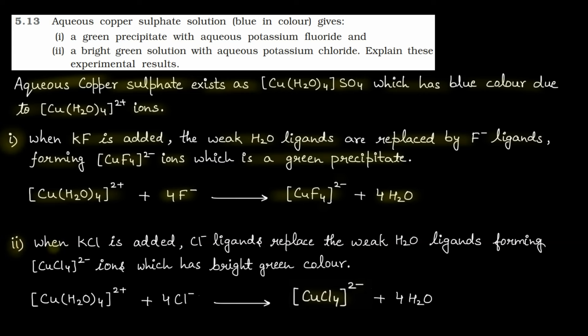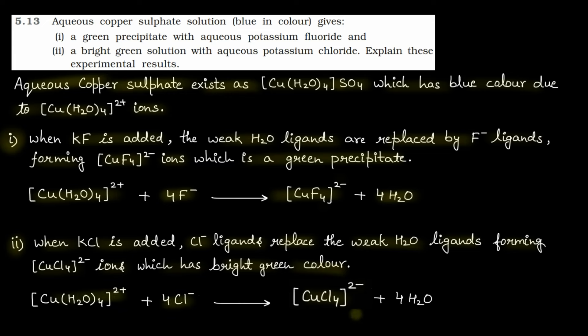And in the second part, when KCl is added, Cl- ligands replace the weak H2O ligands, forming [CuCl4]^2- ions, which has bright green color. And here we have the reaction. This is [Cu(H2O)4]^2+. When KCl is added, then Cl- and you will get [CuCl4]^2- plus 4H2O. Done?